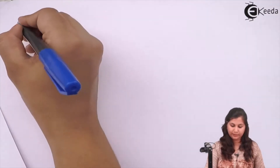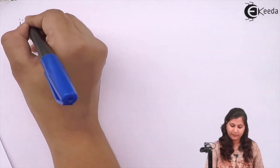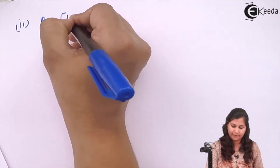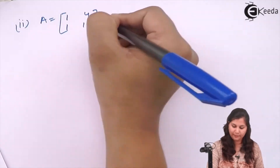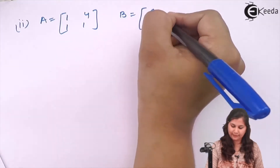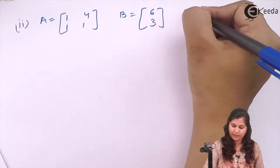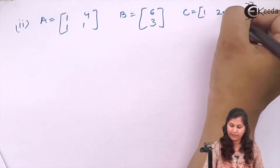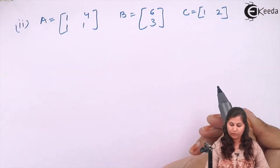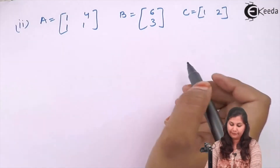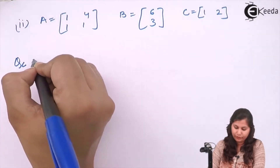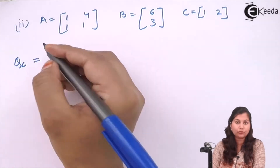Now for the second part, we have the value of A as [1, 4; 1, 1], B is [6; 3], and C is equal to [1, 2]. So we have the values of A, B, C matrices. We calculate QC and Q0.